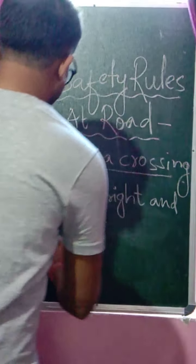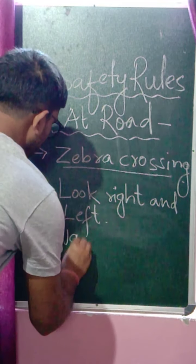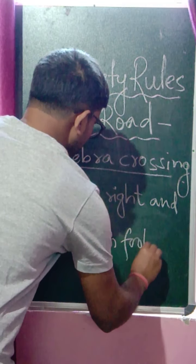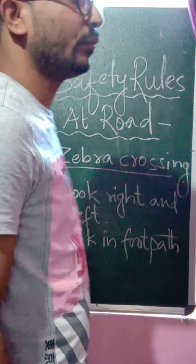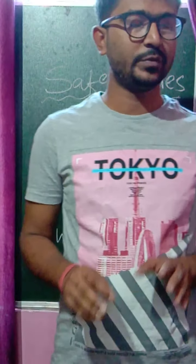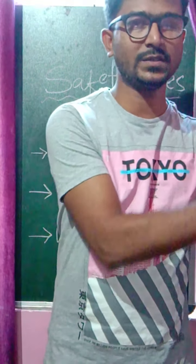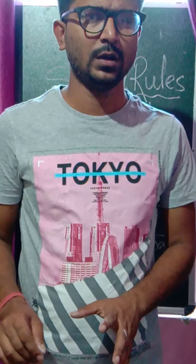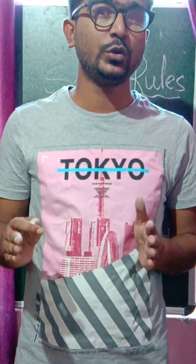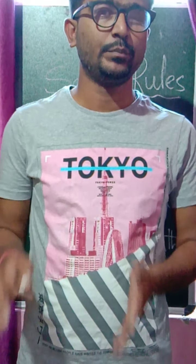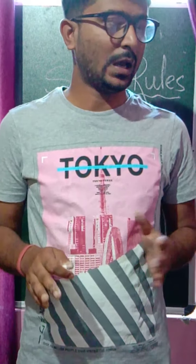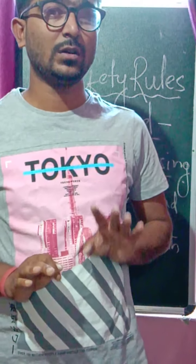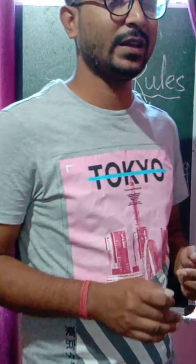The third point: always walk on the footpath. You should always be walking on the footpath. Beside the road, small paths have been made — people should be walking on those paths only. We should not walk towards the roadside, because roads are made mostly for vehicles to move. Footpaths on the side of roads are where you should be walking, keeping yourself safe from accidents.